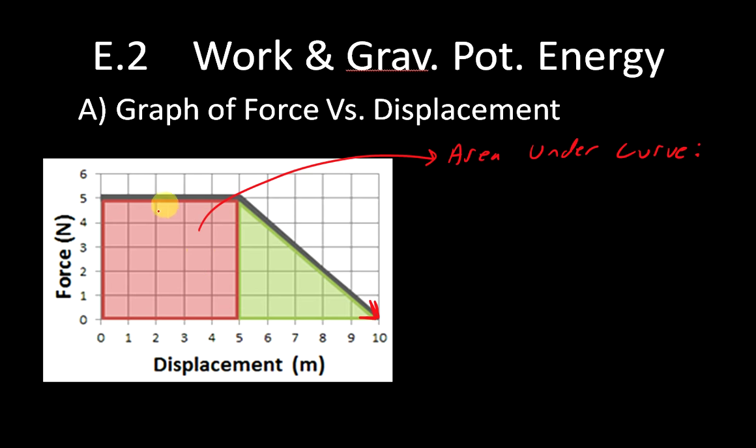Area under curve. Well, this is a square segment. I'm just doing what's in red. So I know that the area is going to equal the base times the height. Well, the base, that's one, two, three, four, five, and that's five meters, because the base is the x-axis, and that's in meters. The height is one, two, three, four, five newtons.